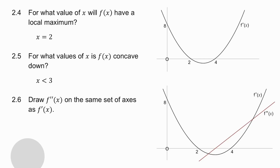Question 2.4 says: for what values of x will f(x) have a local maximum? My derivative is a parabola whose arms go up, so f(x) is going to be a cubic with a positive a value. The local maximum is at the left x-intercept of the derivative, because the local minimum is to the right of it. So f(x) has a local maximum when x is equal to 2.